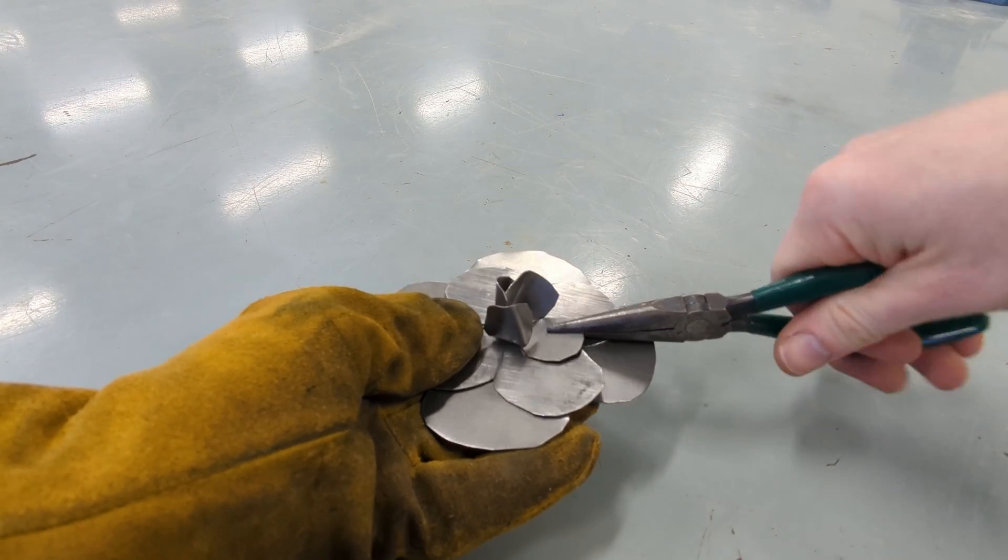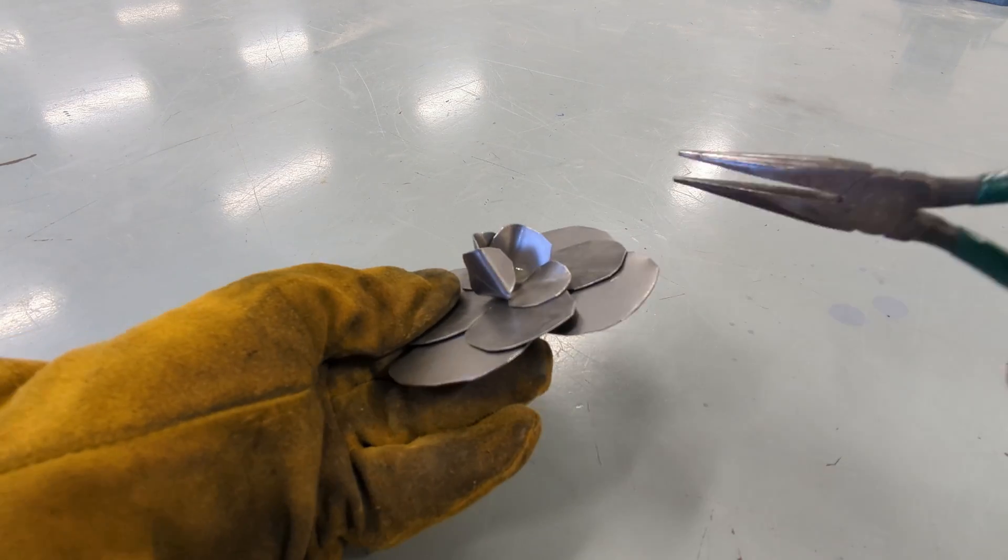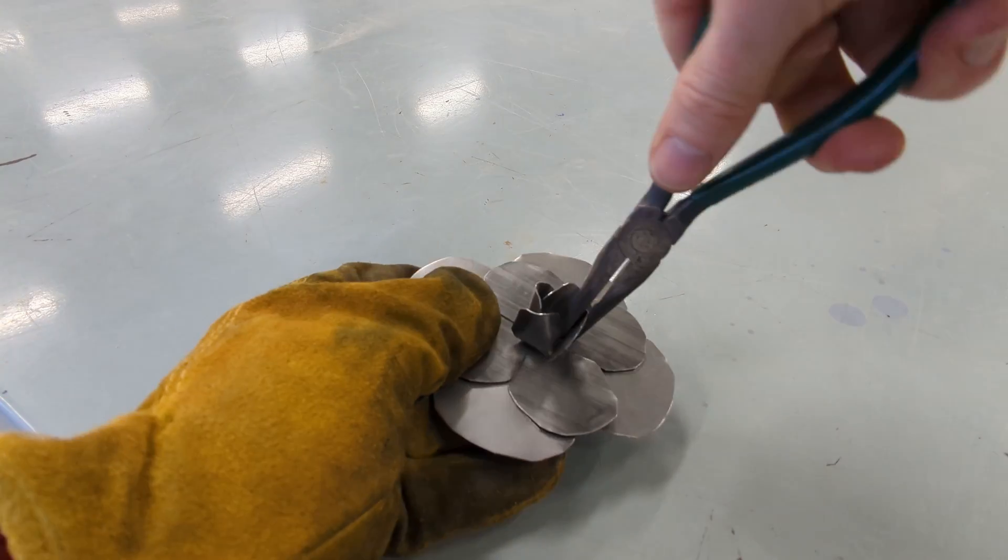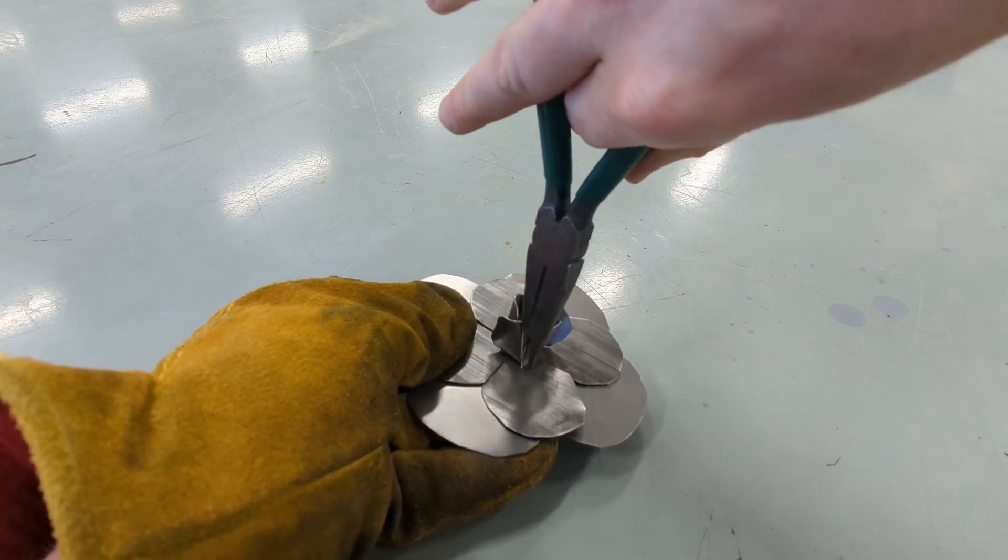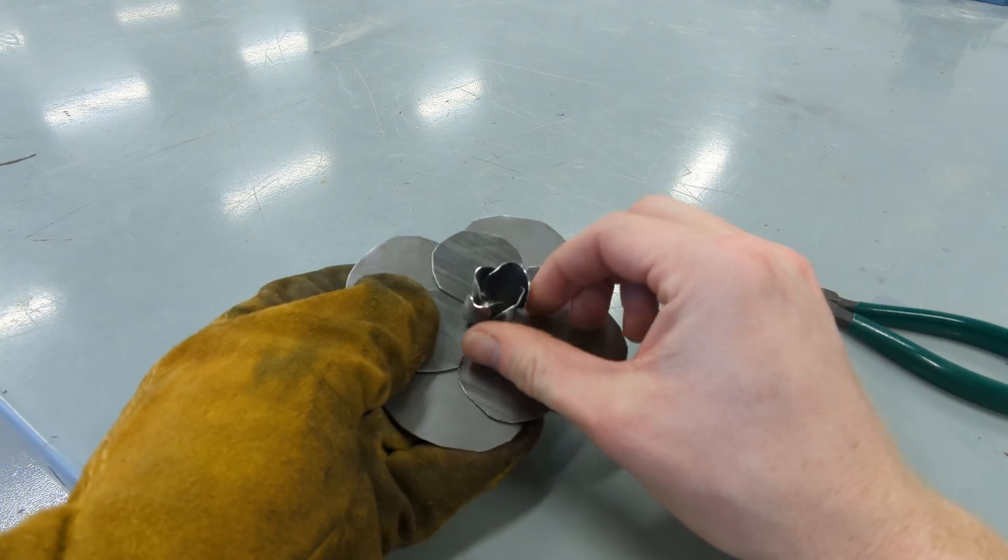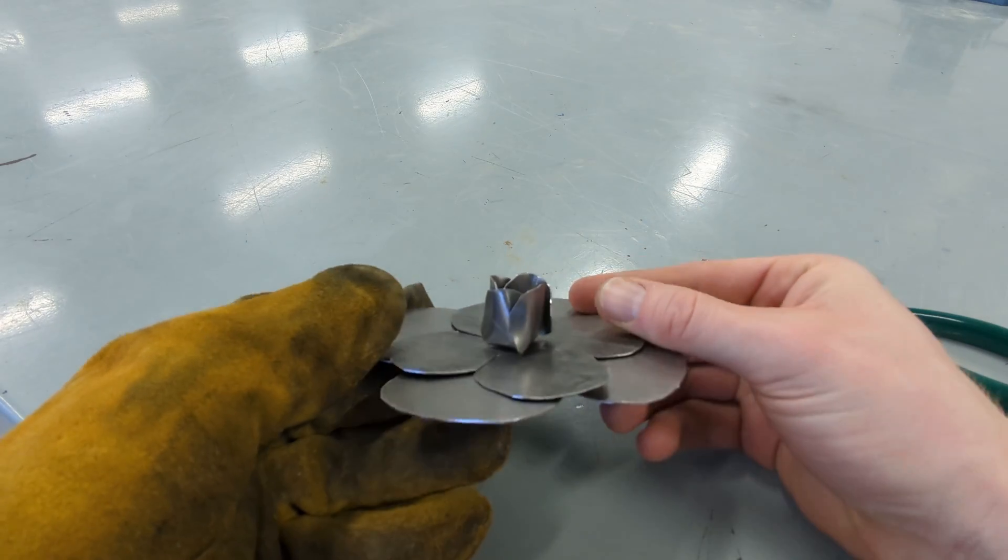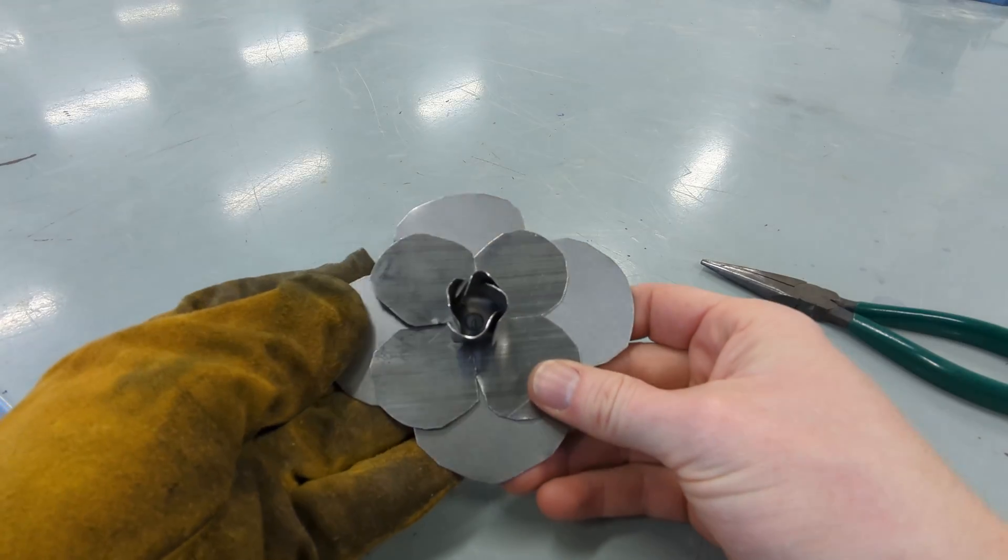When you get to the fourth petal, you may need to do some bending on the initial first petal you worked with to get those two parts to fit the right way. When you have all the petals on that layer up and curved, you're finished. You can move on to repeat the same process on all your other layers.